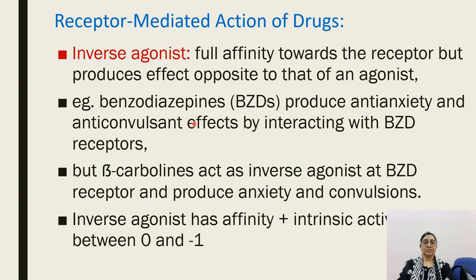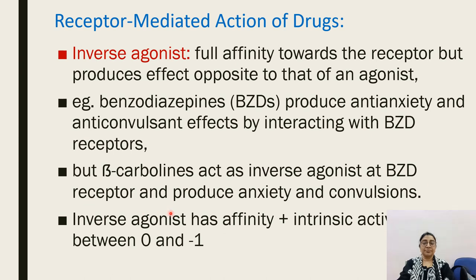An inverse agonist has full affinity toward the receptor but produces the opposite action to the agonist. For example, benzodiazepine is the agonist at the benzodiazepine receptor and produces anticonvulsant and anti-anxiety effects, whereas beta-carboline is the inverse agonist and produces anxiety and convulsant effects at the benzodiazepine receptor. Inverse agonist has affinity plus intrinsic activity between 0 to minus 1.